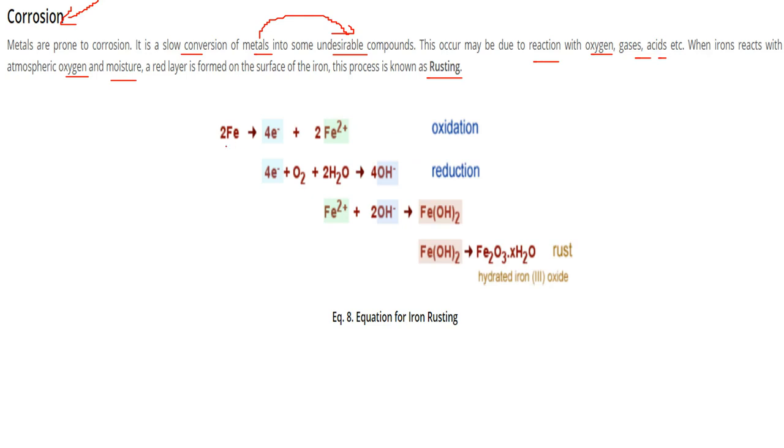This involves oxidation and reduction. Iron will release four electrons to form ferric iron, Fe2+. This electron will combine with oxygen and hydrogen from the water.